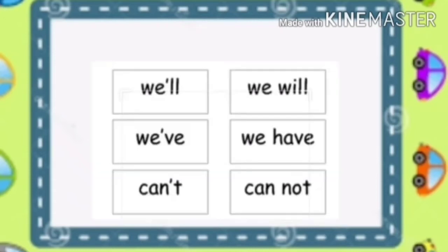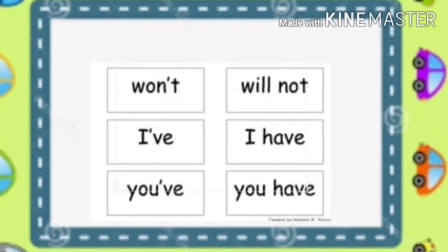We'll is used for we will, we've is used for we have, can't is used for cannot, won't is used for will not, I've is used for I have, and you've is used for you have.